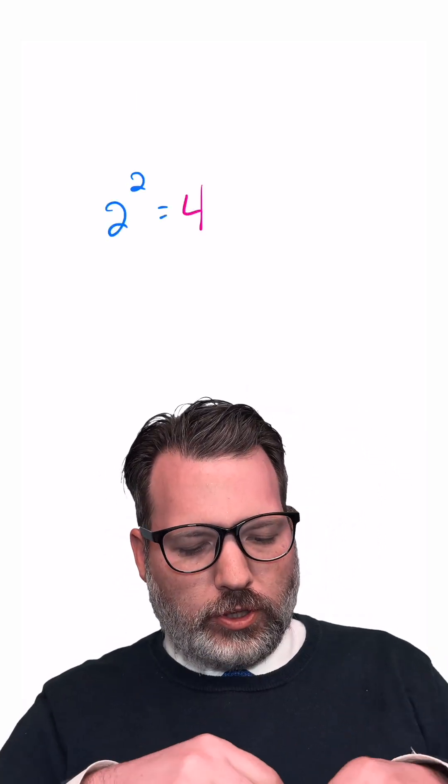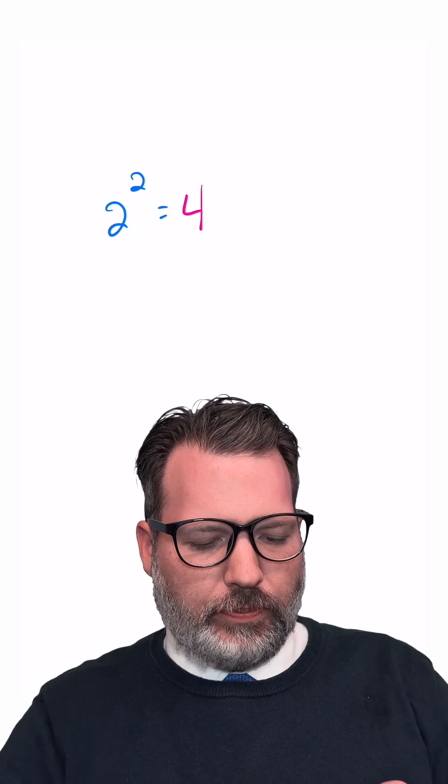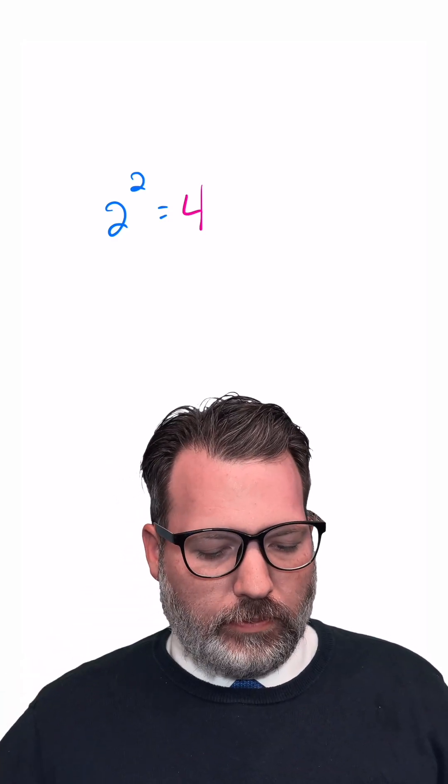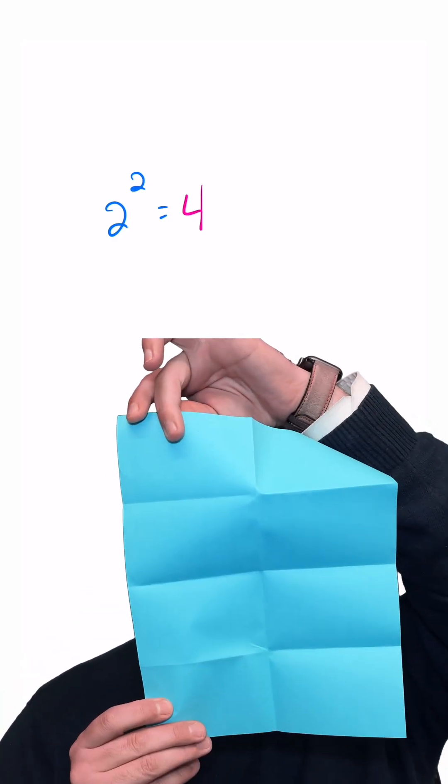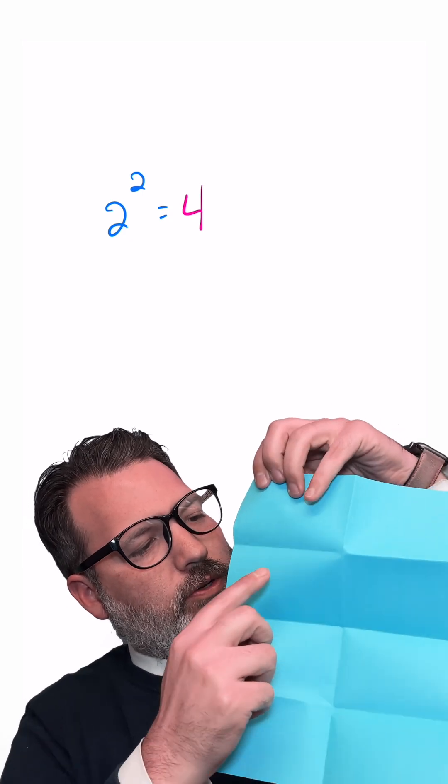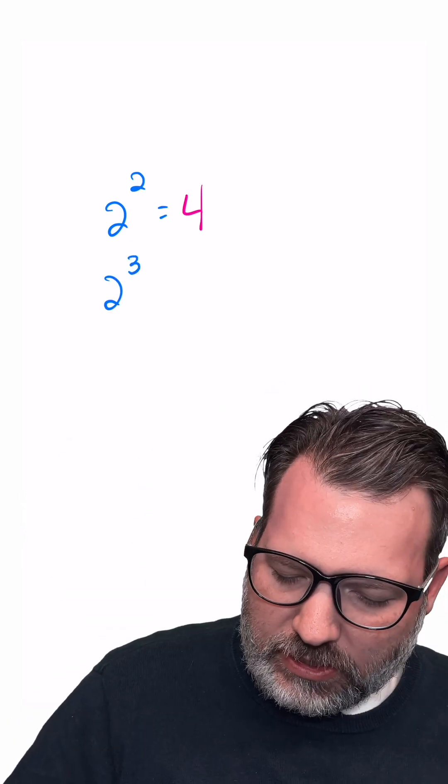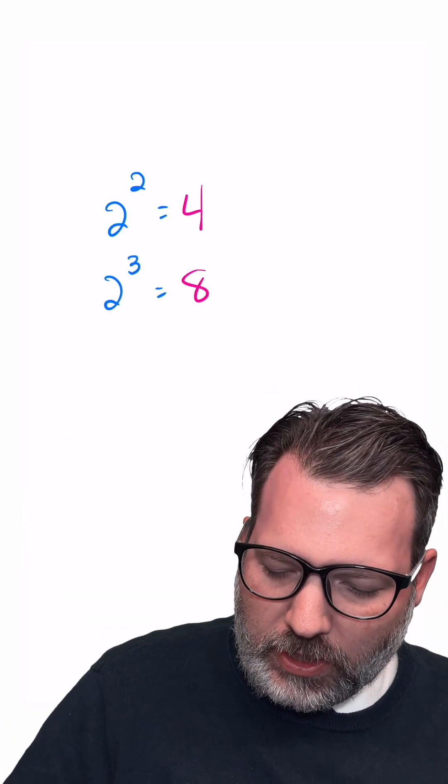If we want to compute 2 cubed, all we have to do is take our piece of paper, fold it one more time, and then as we unfold that and count up the sections, we've got 1, 2, 3, 4, 5, 6, 7, 8. So we can say something like 2 to the 3rd must be equal to 8.